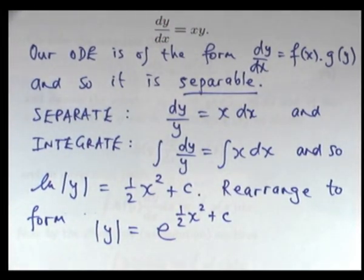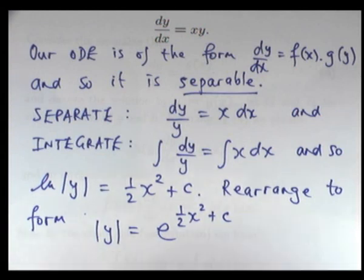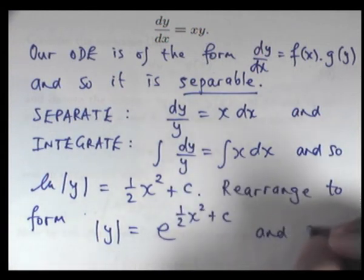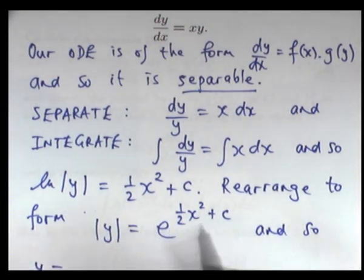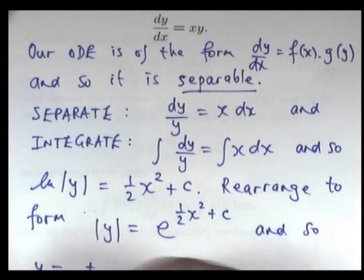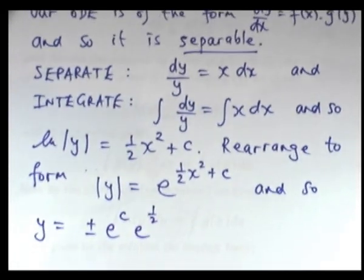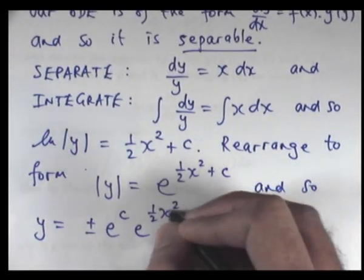What I would like to do now is to get rid of these absolute value signs. So, what I'm going to do, I'm going to break up this right-hand side into e to the c times e to the half x squared.